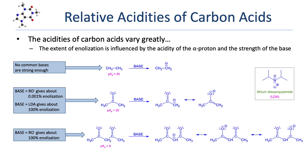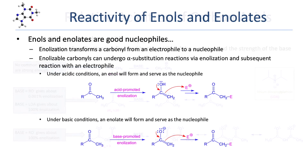Understanding how much enolate has been formed in an enolate reaction can be vitally important. Often, the outcome of a reaction with an enolate intermediate can be greatly impacted by the extent of enolization that's occurred. Both enols and enolates are good nucleophiles. This means that the process of enolization transforms a carbonyl, which is usually electrophilic, into a nucleophile — making carbonyls extraordinarily important, versatile functional groups.